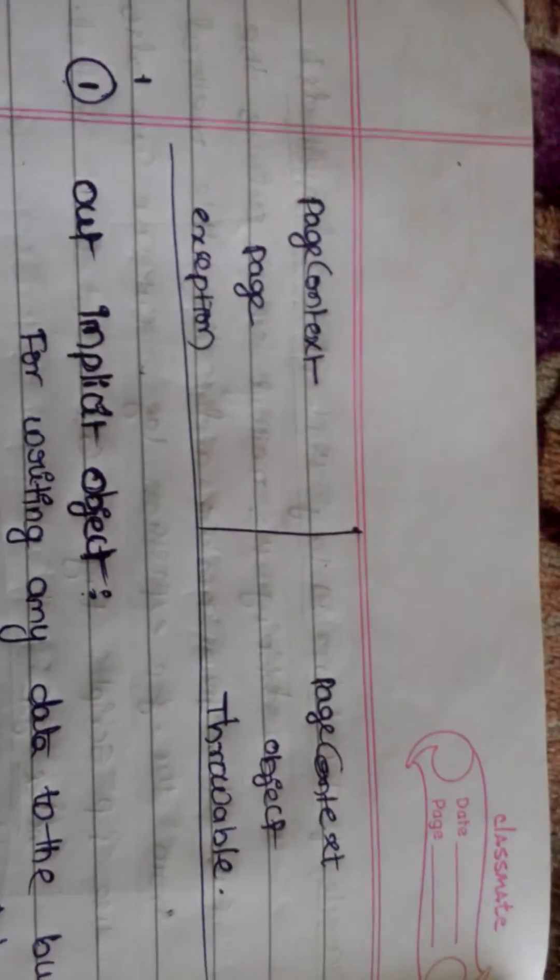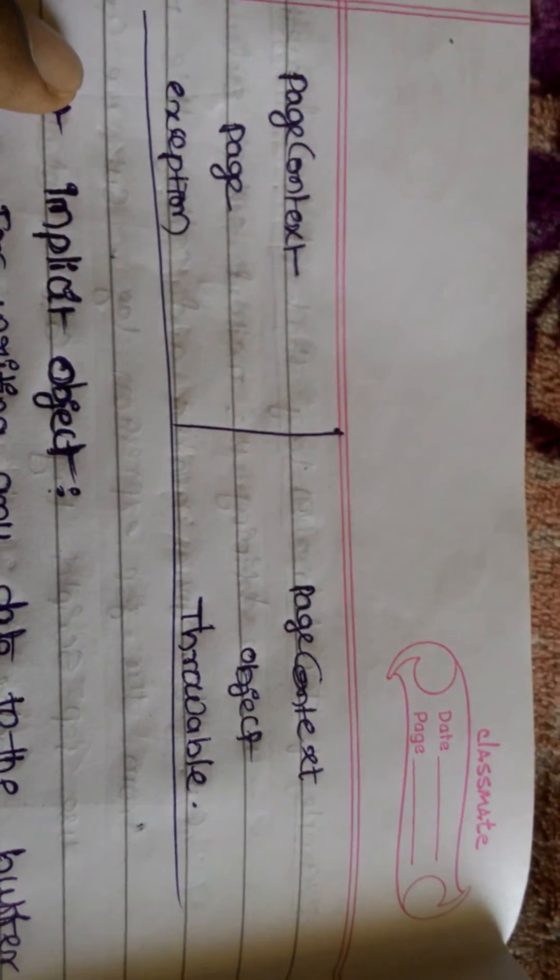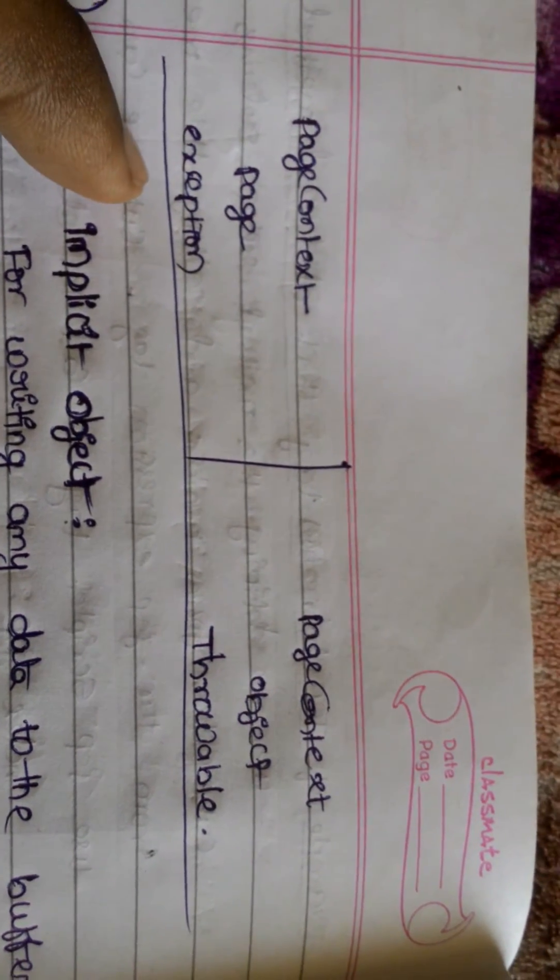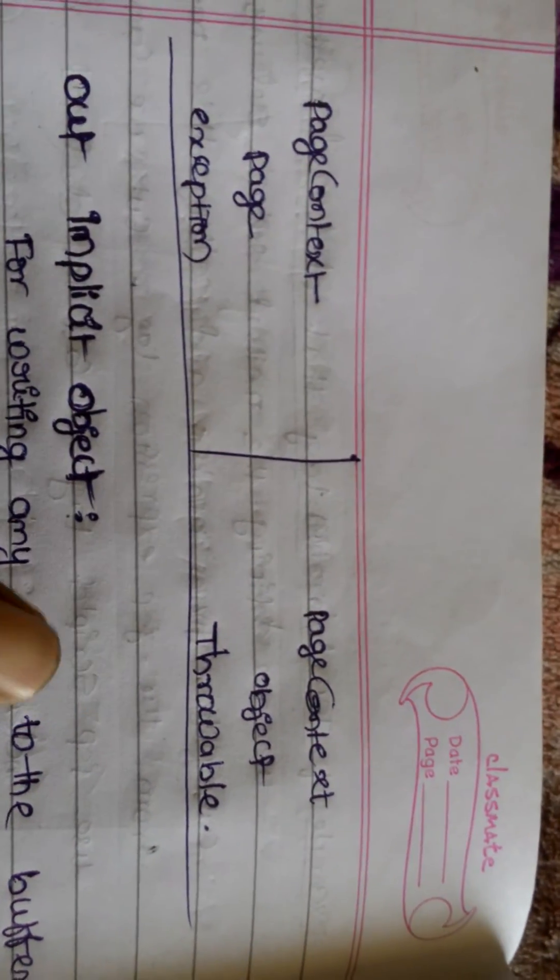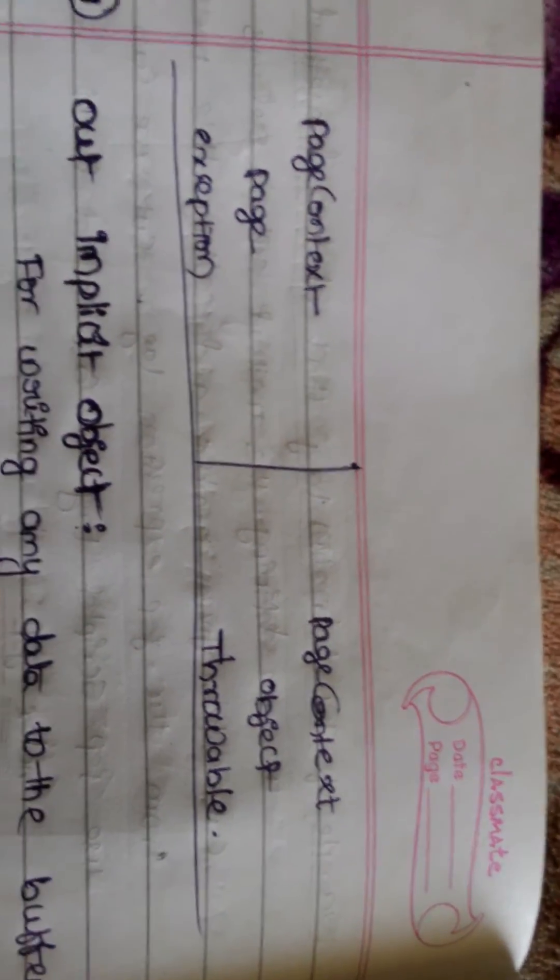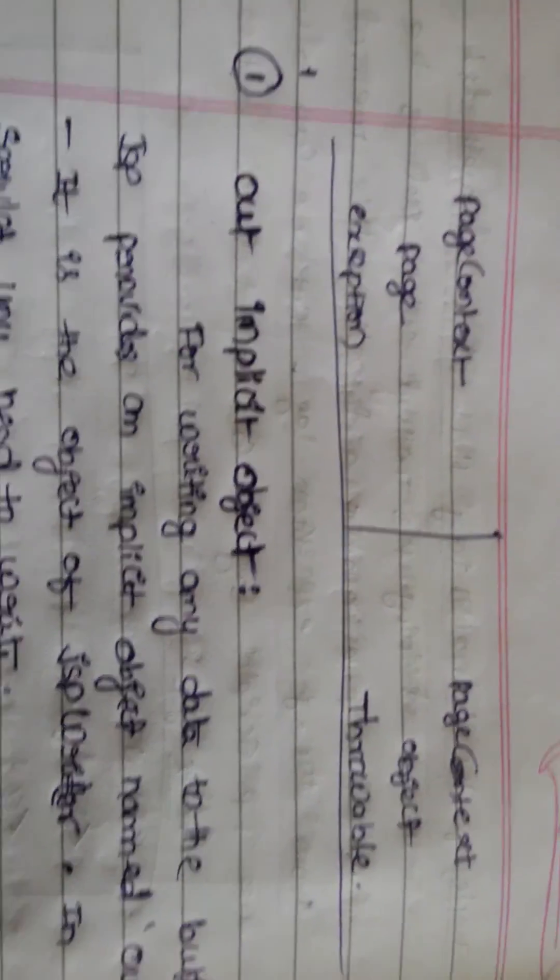Page context is of type PageContext. Exception is of type Throwable. These are all the nine implicit objects in JSP file. We will see them one by one.